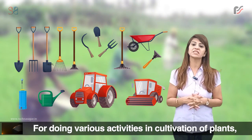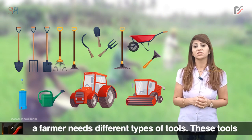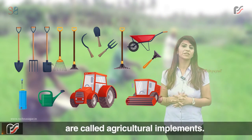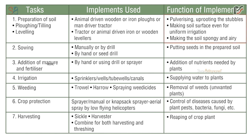For doing various activities in cultivation of plants, a farmer needs different types of tools called agricultural implements. Task 1 is preparation of soil, done by plowing or tilling and leveling, using animal-driven wooden or iron plows, man-driven tractors, and tractor or animal-driven iron or wooden levelers. Functions include pulverizing and uprooting stubbles, making soil surface even for uniform irrigation, and making the soil spongy and airy.